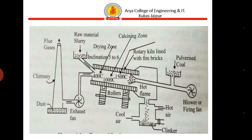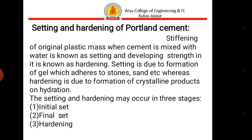Here is a diagram showing the different zones of burning: the drying zone, calcining zone, and burning zone. Now we will discuss the setting and hardening of Portland cement. When cement is mixed with water it is known as setting, and developing strength in it is known as hardening. Setting is due to the formation of gel which adheres to stones, sand, etc., whereas hardening is due to the formation of crystalline products.